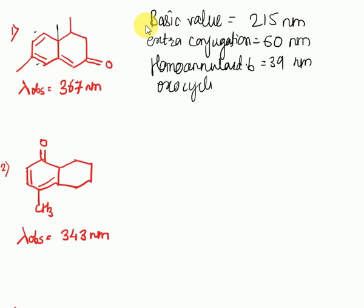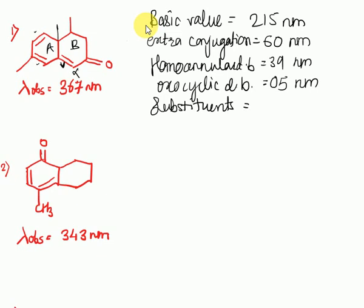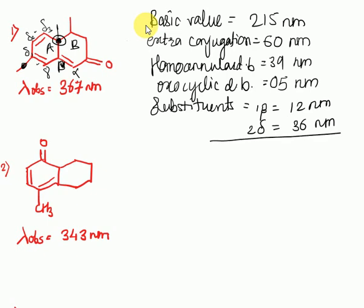Exocyclic double bond: this double bond is exocyclic to ring A, so the exocyclic double bond contributes 5 nanometers. Now for substituents: this is the alpha carbon, then beta, gamma, delta 1, delta 2, and delta 3. There is one beta substituent contributing 12 nanometers, then two delta substituents contributing 36 nanometers — 18 by each substituent at the delta position.